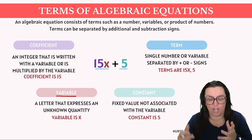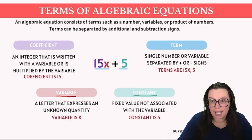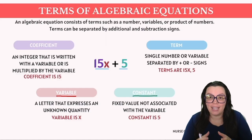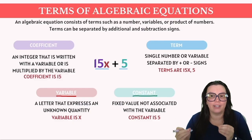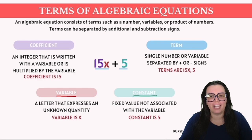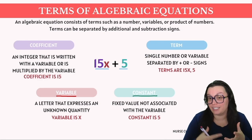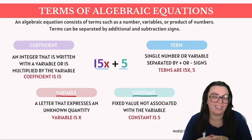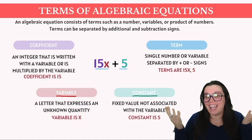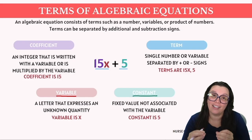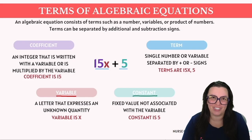Next up we have our constant. In our example the constant is represented by the number 5. It's labeled as a constant because it stands alone without any variable attached to it. Unlike variables whose values might change depending on specific conditions or inputs, a constant remains the same within the expression. Therefore any number that appears by itself, not accompanied by a variable, is considered a constant in algebraic expressions.